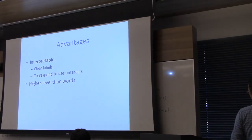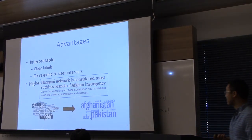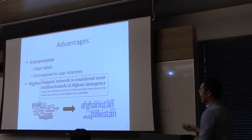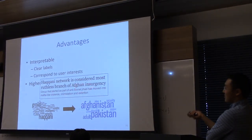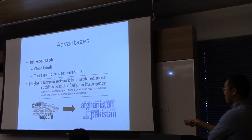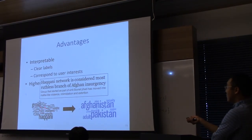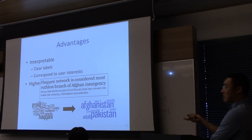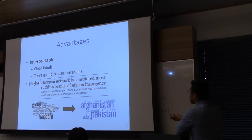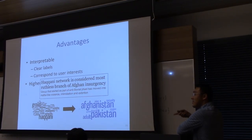Badges are higher level than words because there are much fewer badges than there are unique words. If we represent this using just a word cloud — a visualization of frequency of individual words — you get something that looks like this. It's hard to generalize from this to other articles to figure out what users are interested in. But if you represent this as a linear combination of badges and visualize the most common words within that combination, you get something much more useful.